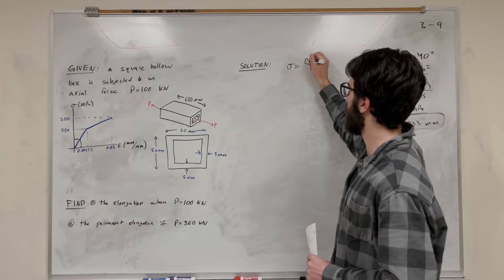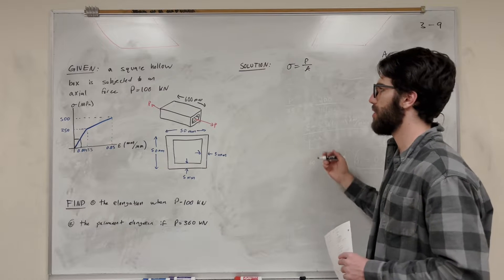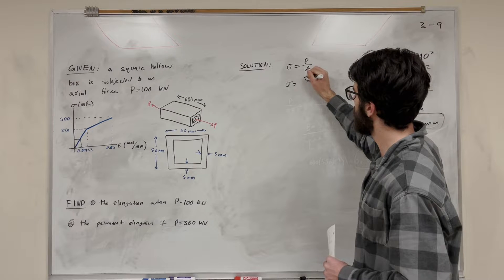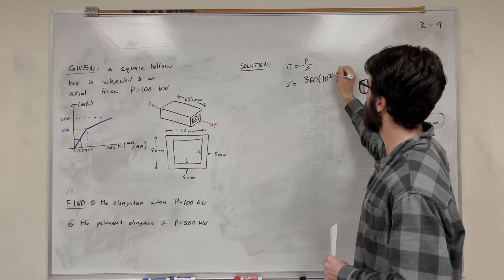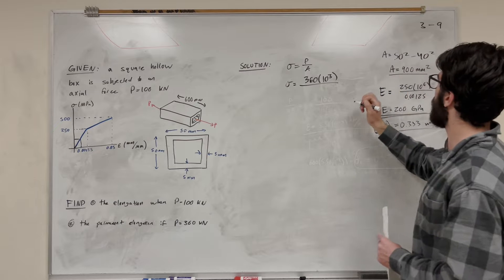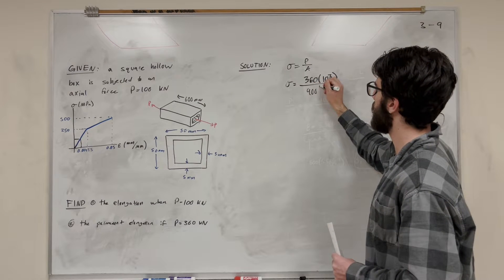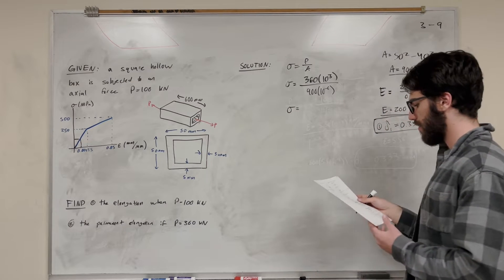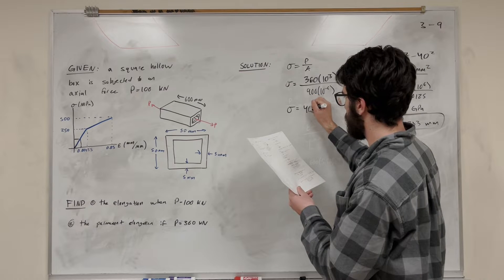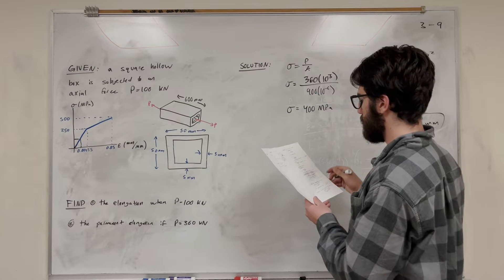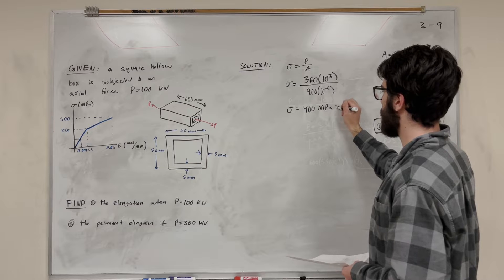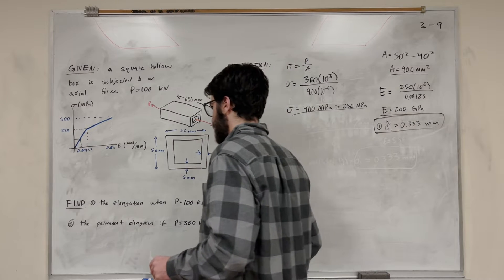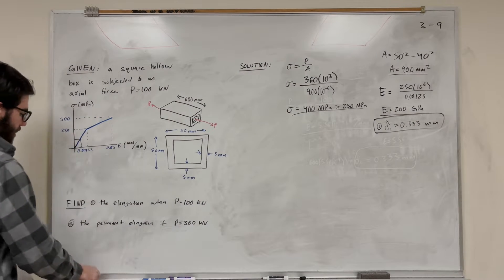Stress is equal to force over area, so we want to find if our stress is over 250. Our force is now 360 kN — times 10 to the third — over 900 millimeters squared — times 10 to the negative 6. You solve for stress and you get that it's equal to 400 megapascals. And 400 megapascals is greater than 250 megapascals, so this means we're past our elastic region — into our inelastic region.